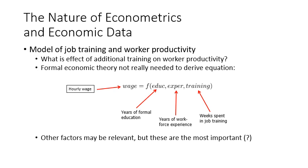These three variables are: education, measured by years of formal education the person has spent; experience, referring to years of workforce experience; and training, measured by weeks spent in job training. We expect these three variables could affect hourly wages on average. Other factors may be relevant, but these are the most important and measurable ones — other variables may not be measurable.